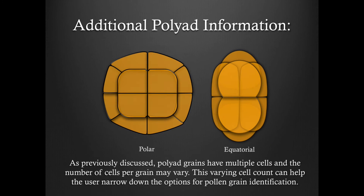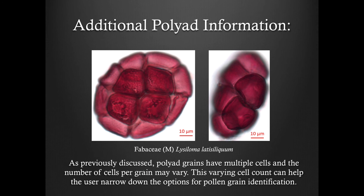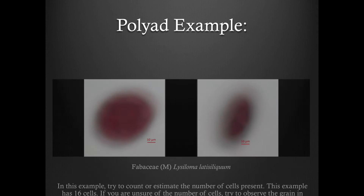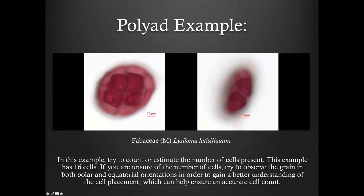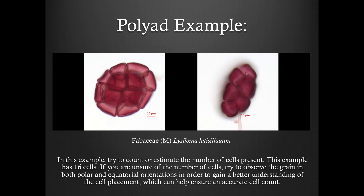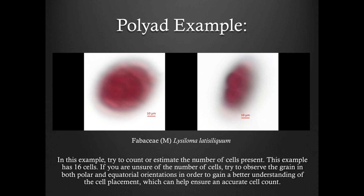Additional polyad information. As previously discussed, polyad grains have multiple cells, and the number of cells per grain may vary. This varying cell count can help the user narrow down the options for pollen grain identification. Here is an example. Take a moment to watch these Z-Stack videos. In this example, try to count or estimate the number of cells present. As you can see in the videos, this example has 16 cells. If you are unsure of the number of cells, try to observe the grain in both polar and equatorial orientations in order to gain a better understanding of the cell placement, which can help ensure an accurate cell count.